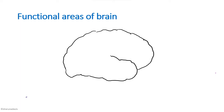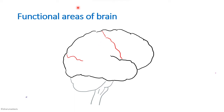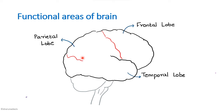We can first draw the lateral surface of the cerebrum and briefly show the cerebellum as well as the brain stem. Then mark the central sulcus and the parietal occipital sulcus. In front of the central sulcus we have the frontal lobe, behind it the parietal lobe, and then the temporal lobe and the occipital lobe. These are further divided into different Brodmann areas.